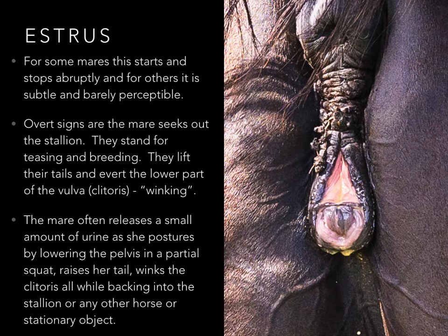In estrus, it starts and stops abruptly in some mares and is very subtle in others. Overt signs are the mare seeks out the stallion — the stallion does not go around knocking on the mare's door; it's the mare who seeks out the stallion. They stand for teasing and breeding. In the barn, you can bring the stallion up to the mare and she'll bend her legs, lift her tail, and avert the clitoris — called winking. The mare often releases a small amount of urine as she postures by lowering the pelvis in a partial squat, raises her tail, winks the clitoris while backing into the stallion, or in some cases any other object, including other mares.